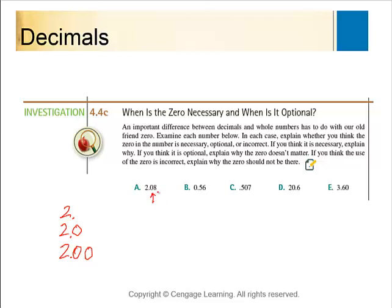This 0 is a placeholder to let you know that you have 8 hundredths and not 8 tenths. This 0 is just to show that we have 0 ones, and this is another placeholder 0. This 0 at the end isn't really doing anything, and that's another placeholder.